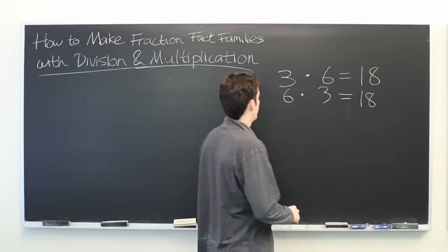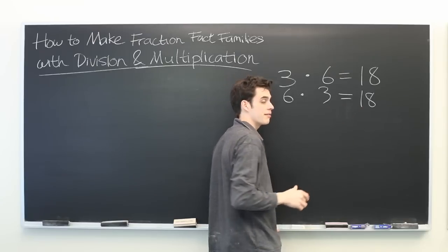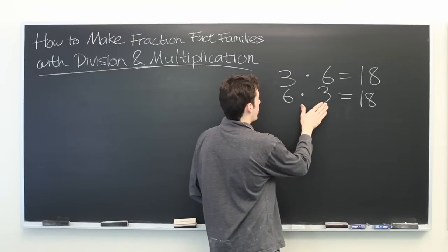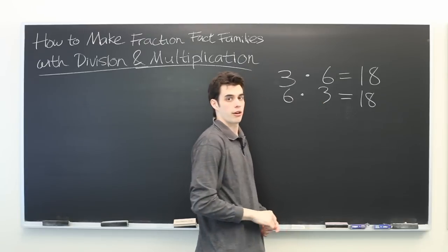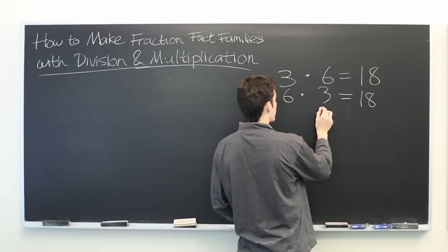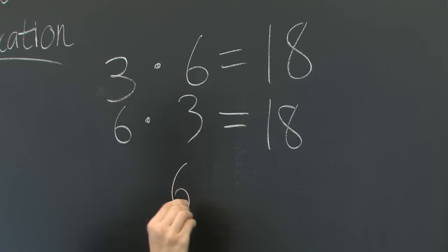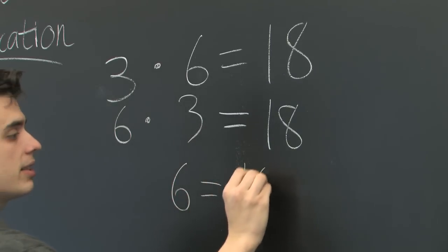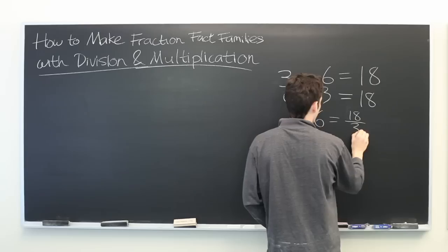From here, we can divide both sides of the equation by either one of these two factors to get another fact. For example, if we divide by 3 on both sides, we get 6 is equal to 18 divided by 3.